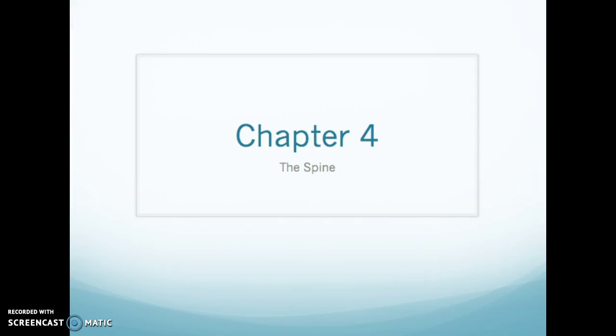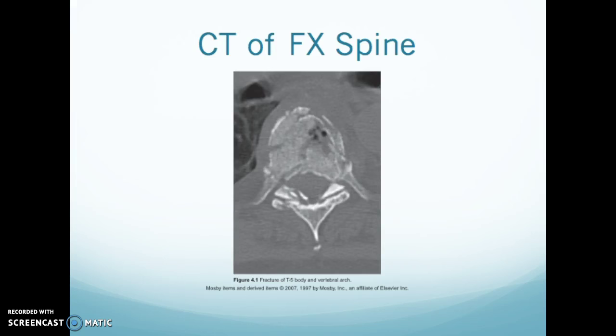We are already on chapter 4, which is the spine. When we are looking at the spine, CT is really good for any kind of gross bony abnormalities, such as compression fractures. This is a great example of a compression fracture of the T-spine. I know that because I can see the rib coming off, and there's also lung visible here, so that gives me the clue that we are in the thoracic cavity.